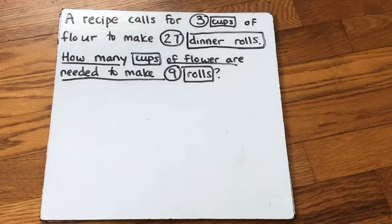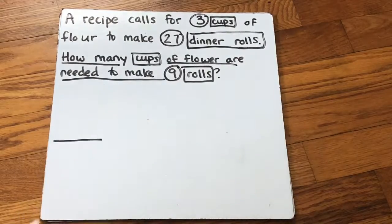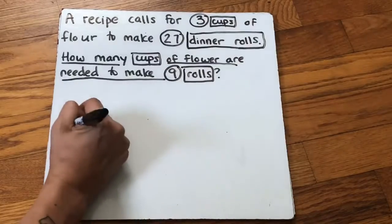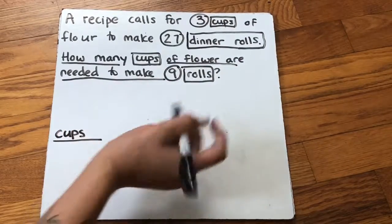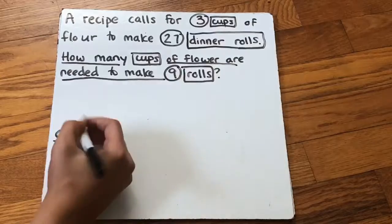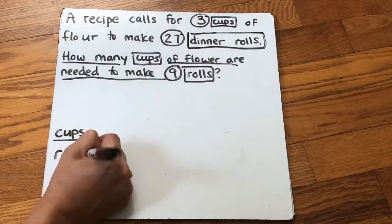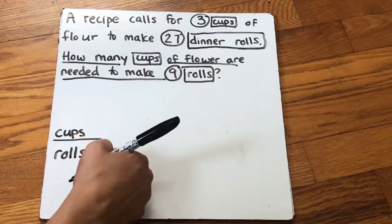So this is a proportion problem. The first thing I do is set up my words. It seems like I have cups of flour, so I'm going to put cups — and the cups of flour are needed to make a certain number of dinner rolls. So I have cups per rolls.